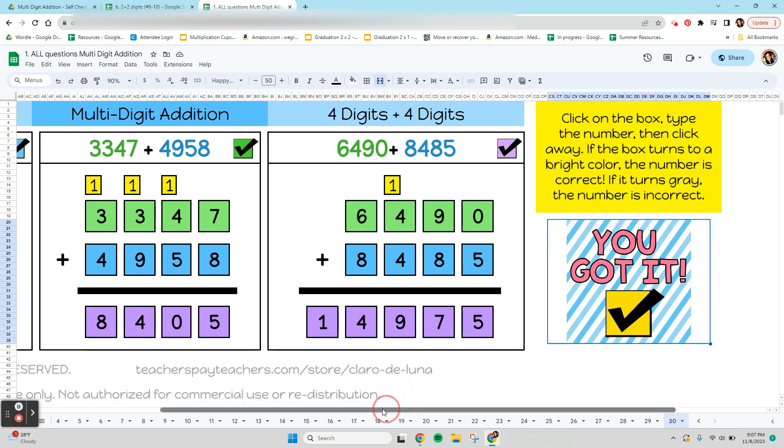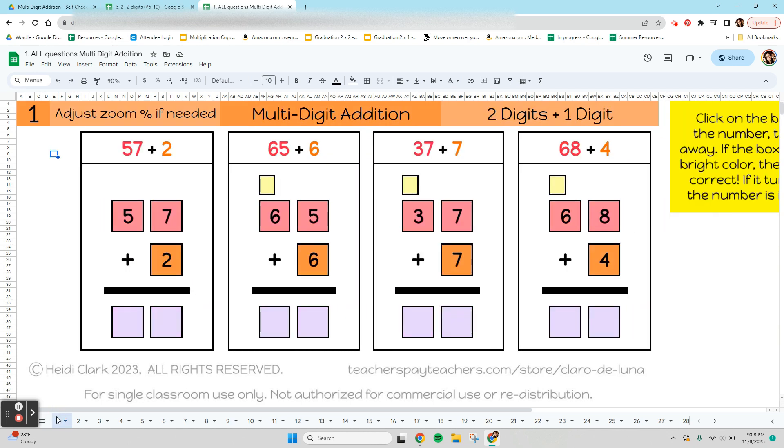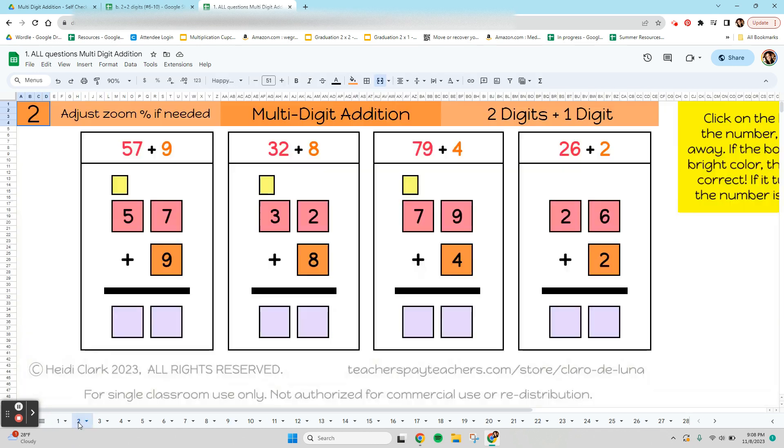So that's how we do our self-checking addition. Remember to adjust the zoom right here just so that it's comfortable to work. Use these little arrows if you do have all 30 tabs, and remember that you need to click away in order to get the feedback for the box to show you if it's correct. I hope this is helpful for you, and I hope that you have a great time doing your multi-digit addition.